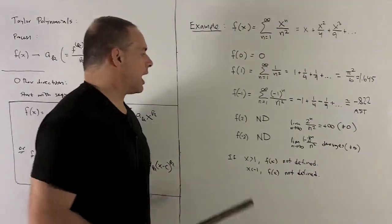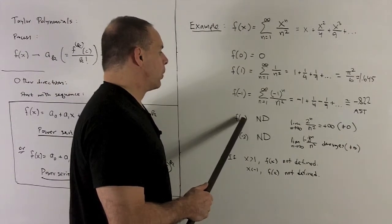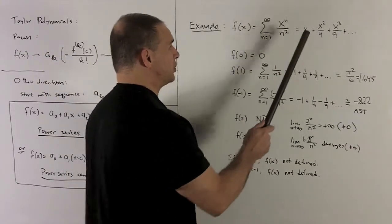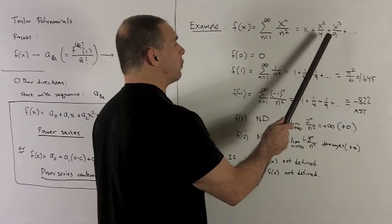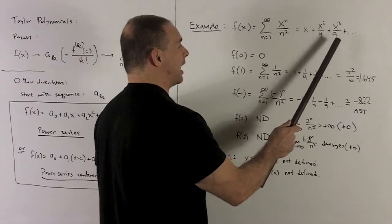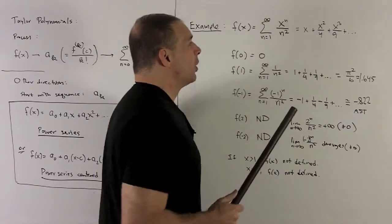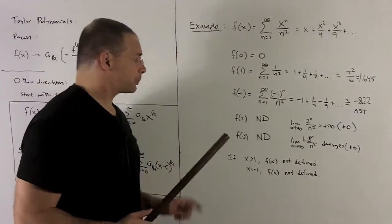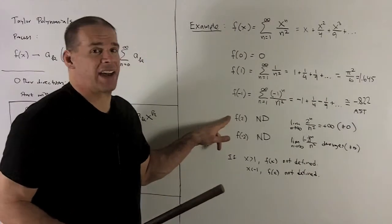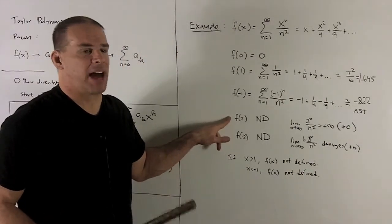But let's keep going. How about if we try f of two? If I try f of two, it's going to be two plus two squared over four plus two cubed over nine and so on. What's going to happen is the series is going to diverge, meaning the function's not defined at two.